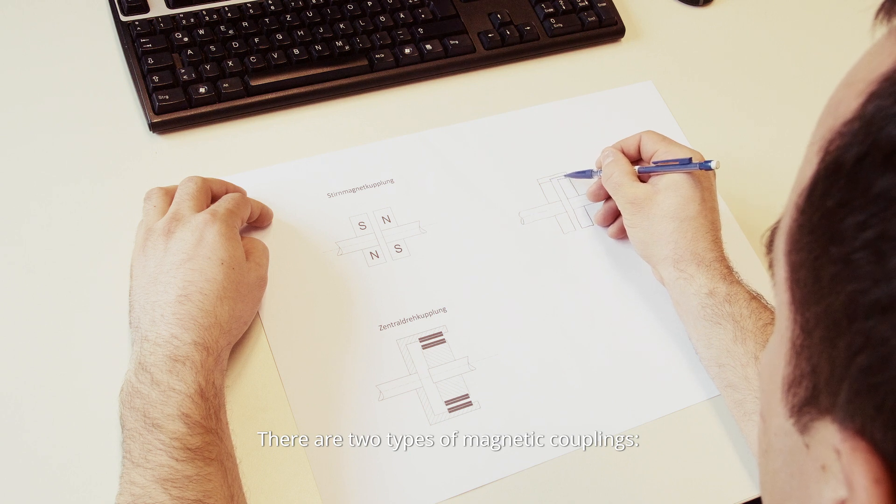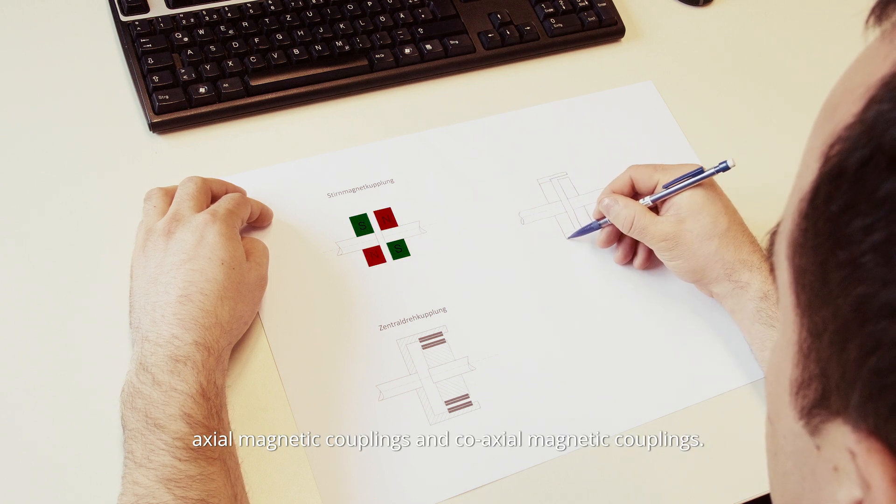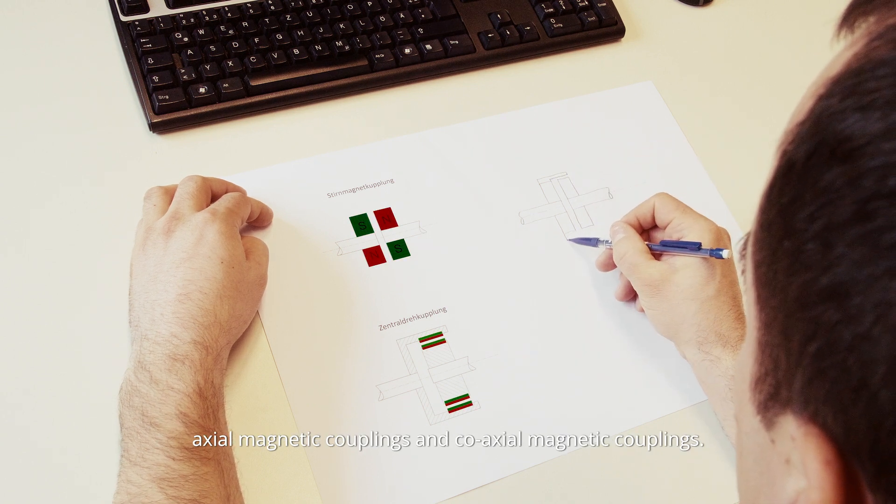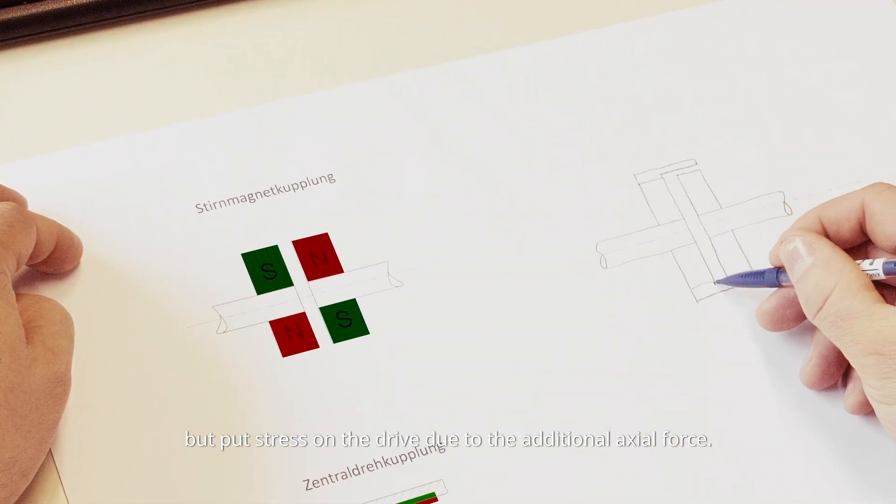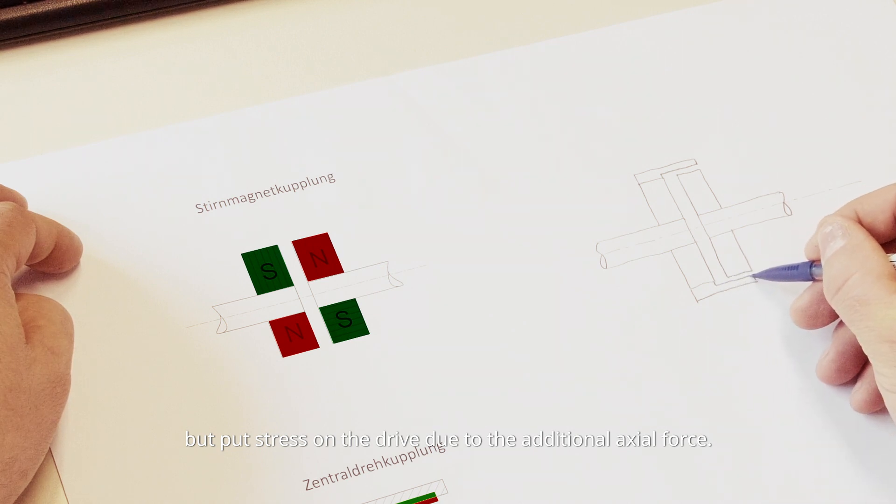There are two types of magnetic couplings: axial magnetic couplings and coaxial magnetic couplings. Axial magnetic couplings can be miniaturized very easily, but put stress on the drive due to the additional axial force.